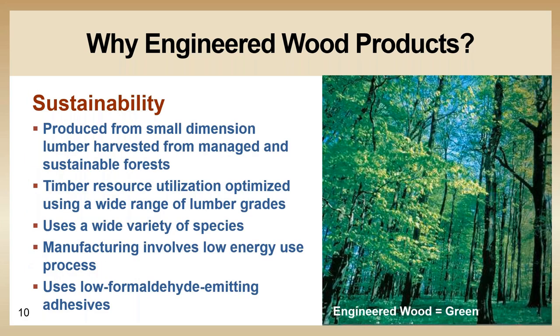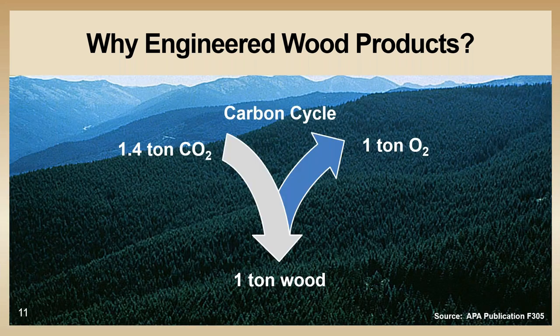Wood is the most common naturally renewable building material, and engineered wood takes this a step further by maximizing the strength of the material and using smaller pieces of wood to create larger members. Wood product manufacturing also consumes less energy than other building products. Regarding zero net carbon — a particularly hot topic in the market — forests are natural carbon sinks: they take in carbon dioxide and give off oxygen, and as the forest grows, carbon gets sequestered or stored in the wood.